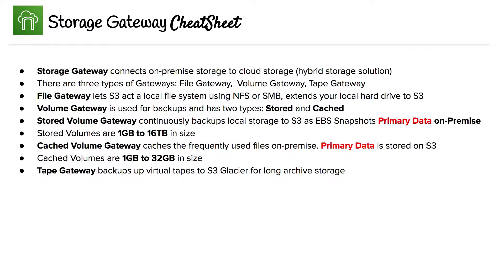Cache volume gateway caches the most frequently used files on-premise, and the primary data is stored on S3. Remember the difference between where the primary data is being stored. Cache volumes are between one gigabyte and 32 gigabytes in size.